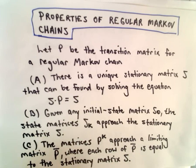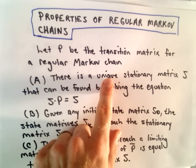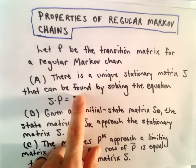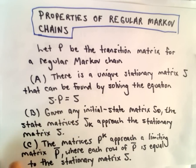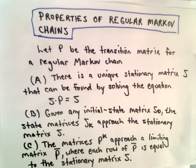One of the properties says there's a unique stationary matrix S that can be found by solving the equation S times P equals S. And we'll solve that equation in this video. We'll do another example in the video after this in a more applied setting, but it'll be the exact same idea.